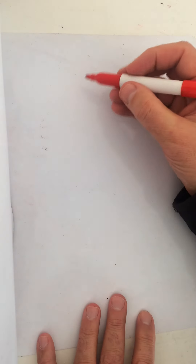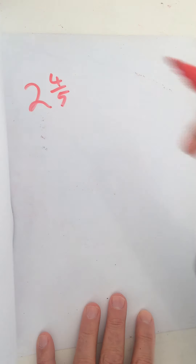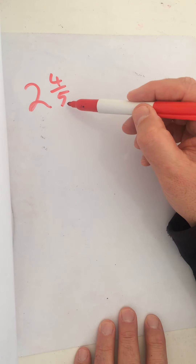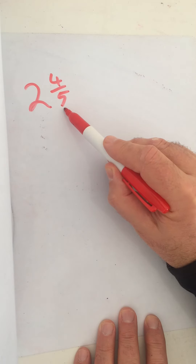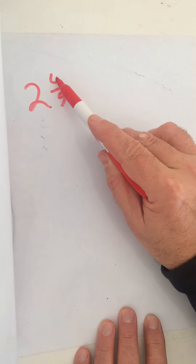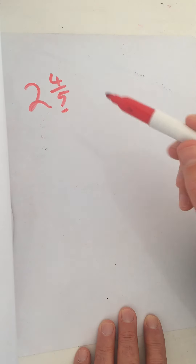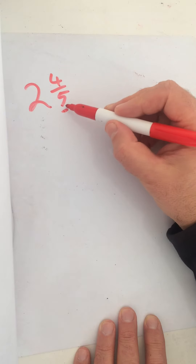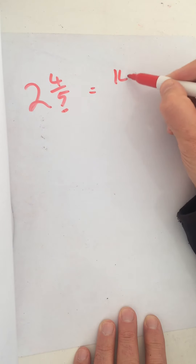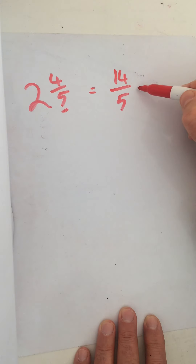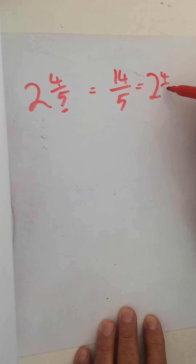Now we go the opposite way — where we have a mixed number and want to turn it into an improper fraction. We'll need to do this for some of the work coming up. Say we've got two and four fifths. We take the denominator, multiply by the whole number, then add the numerator. So it's five times two add four — that's ten add four, which is fourteen. It becomes fourteen over five. You can check by seeing how many fives are in 14 — two remainder four. Correct.